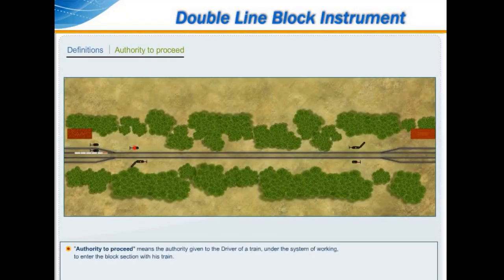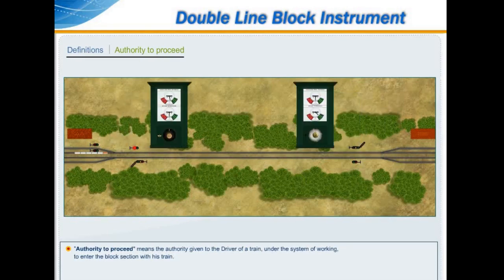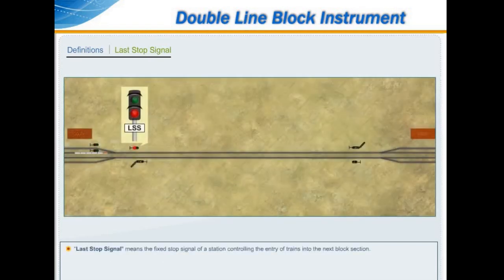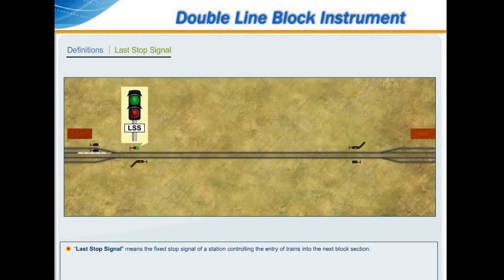Authority to proceed means the authority given to the driver of a train under the system of working to enter the block section with his train. A stop signal means the fixed stop signal of a station controlling the entry of trains into the next block section.